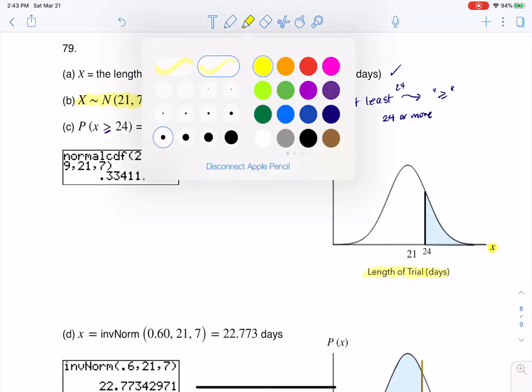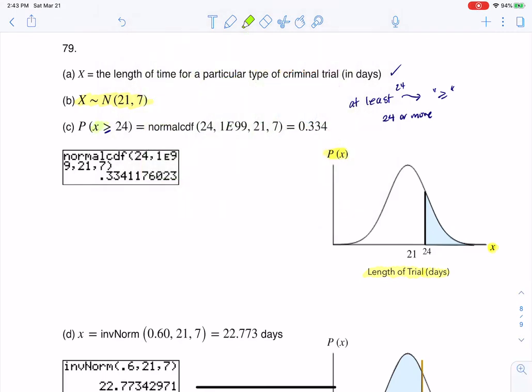So what I would do then is I would start with my x-axis, I would look at x is greater than or equal to 24, and I would find 24 on my x-axis, and it's right around here. And the reason I know that is because if my standard deviation is 7, and I want to go 1, 2, 3 deviations above.